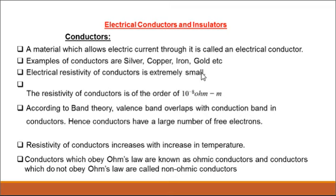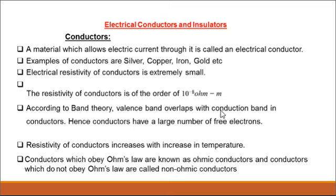A conductor consists of a very large number of free electrons, meaning its resistivity is very low. The order of resistivity is 10 to the power of minus 8 ohm meters. According to band theory, electrons exist in the valence band and conduction band. For conductors, the valence band and conduction band overlap together, so electrons easily move from valence band to conduction band. That is why it consists of a large number of free electrons.